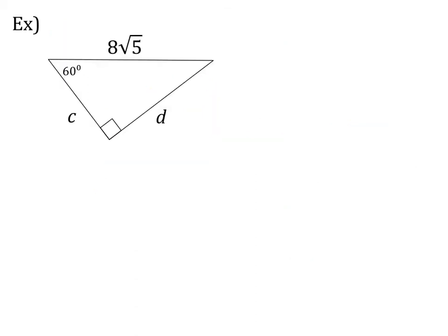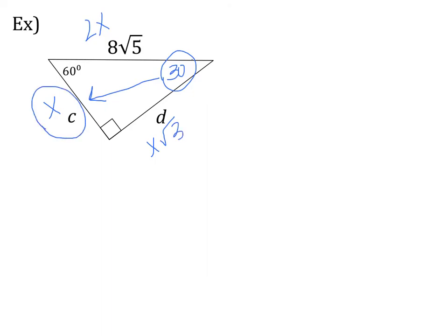Let's try this next example. I see I have a right angle and a 60-degree angle, so my last angle is my 30-degree angle. We know the 30-degree angle is the most important, so I'm going to circle it and draw an arrow. That side is my x, my hypotenuse is 2x, and my leftover side is x√3. Since x and c are going to be equal, I can also rewrite this side as 2c and this side as c√3.